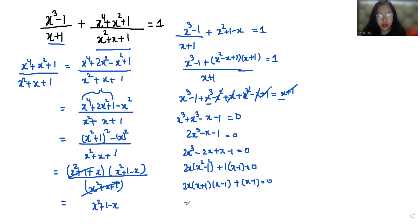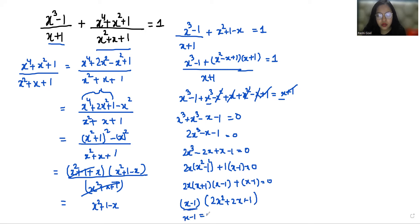Now x minus 1 is common, so factoring out gives (x minus 1)(2x² plus 2x plus 1) equals 0. From the first factor, x minus 1 equals 0, so x equals 1.